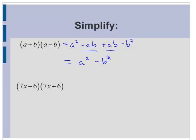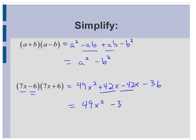Alright, so let's look at another one. 7x minus 6 and 7x plus 6. So 7x times 7x is 49x squared. 7x times positive 6 would give me plus 42x. Now negative 6 times 7x would be minus 42x. And negative 6 times positive 6 would be minus 36. And again, those middle terms are opposites and add up to zero. And we're left with 49x squared minus 36.